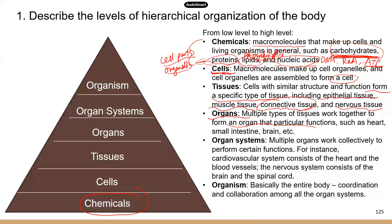The brain, liver, small intestine — all of these are organs, and they consist of multiple types of tissues working together.